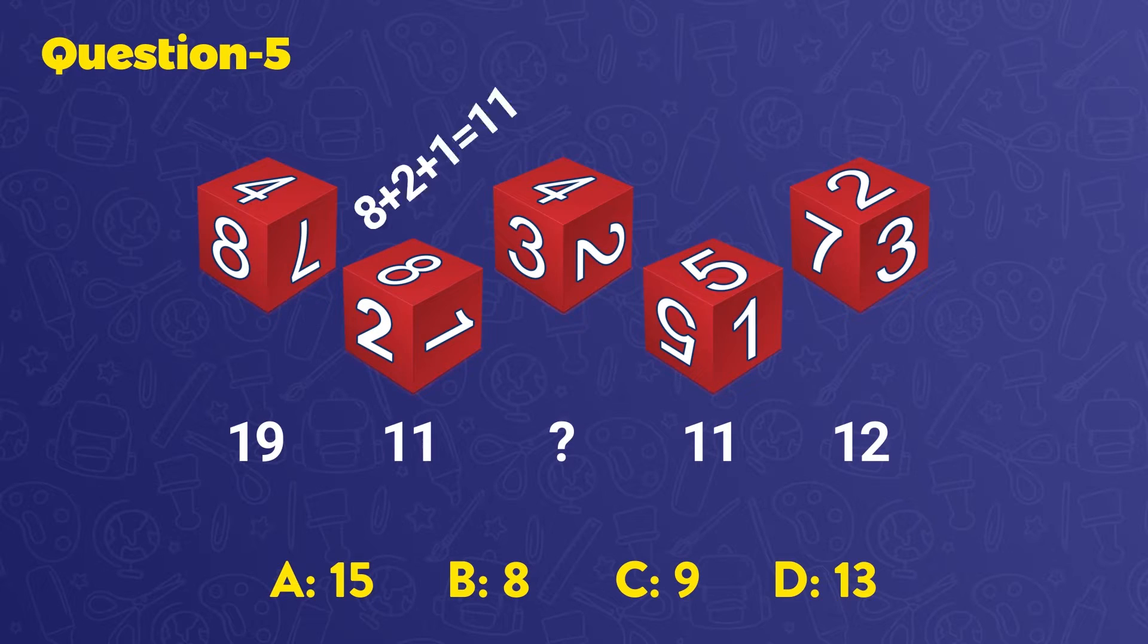Let's look at the second cube. The same addition needs to be made to obtain 11. If we do another addition operation with the numbers on the third cube, we will have the value that goes into the question mark. So, the question mark should be 9. The right answer is C.